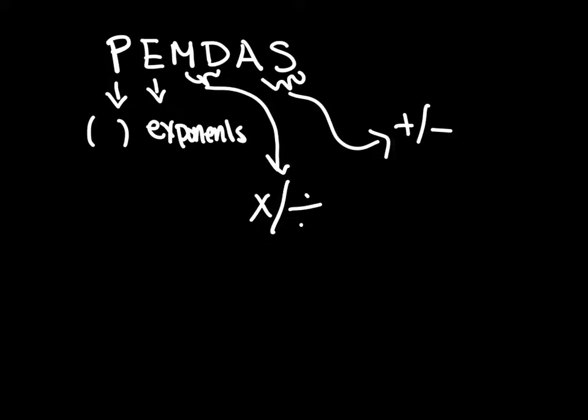So this is the order in which we solve these problems. P for parentheses, E for exponents, M and D for multiplication and division, and A and S for addition and subtraction. So let's try a problem.